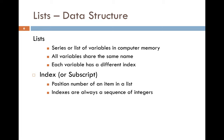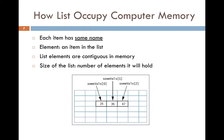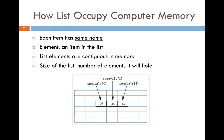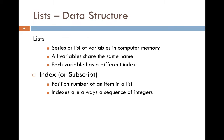The index is the position number of an item in the list. In arrays, indexing starts from 0, so the first position has index 0, the second position has index 1, and the third position has index 2. Indexes are always a sequence of integers.